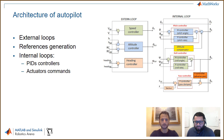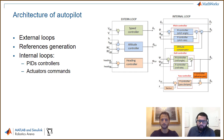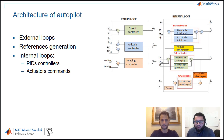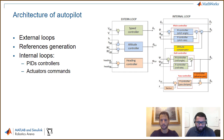From the external loops, we generate references for the internal loops. As you can see, we have the speed controller, altitude controller, and heading controller. From the reconstructed dynamic state of the aircraft — derived from sensor data — the external loops generate reference values for the internal loops, which are the actual PID controllers from which commands are sent to the actuators. This is a very common control architecture for autopilots used in almost every airplane.